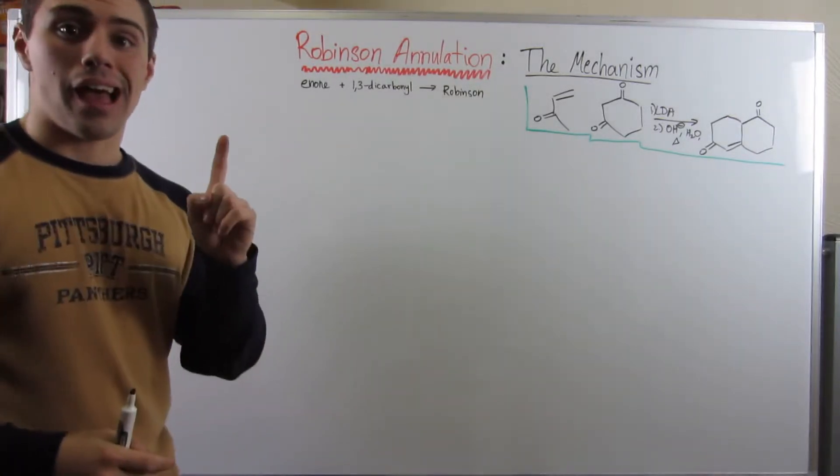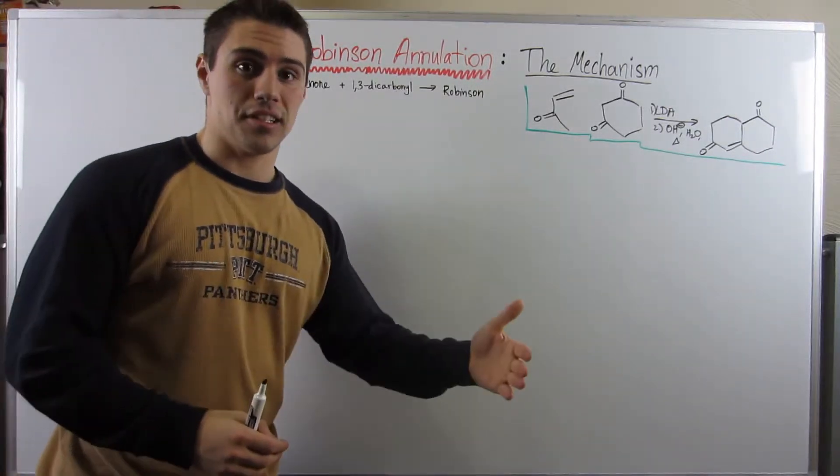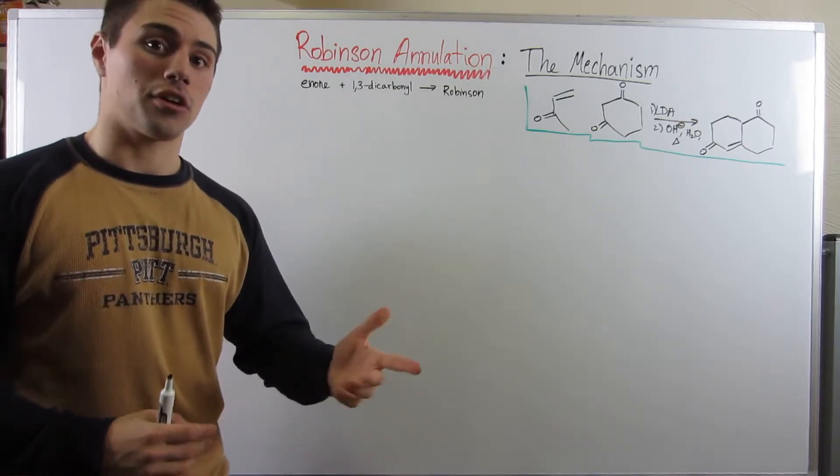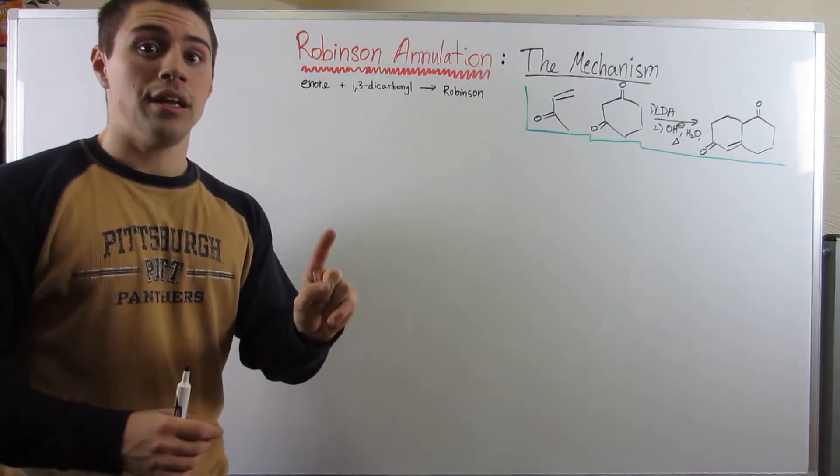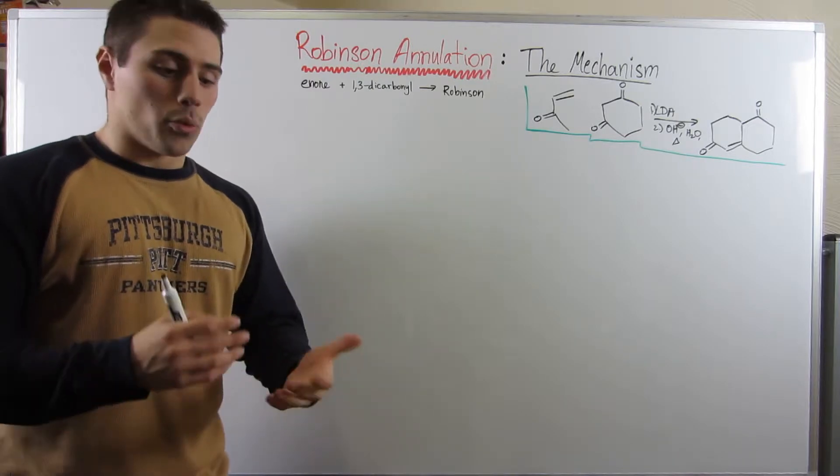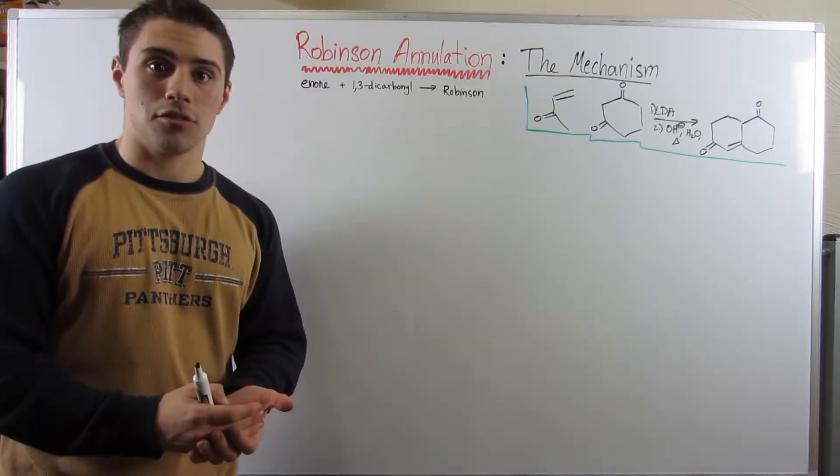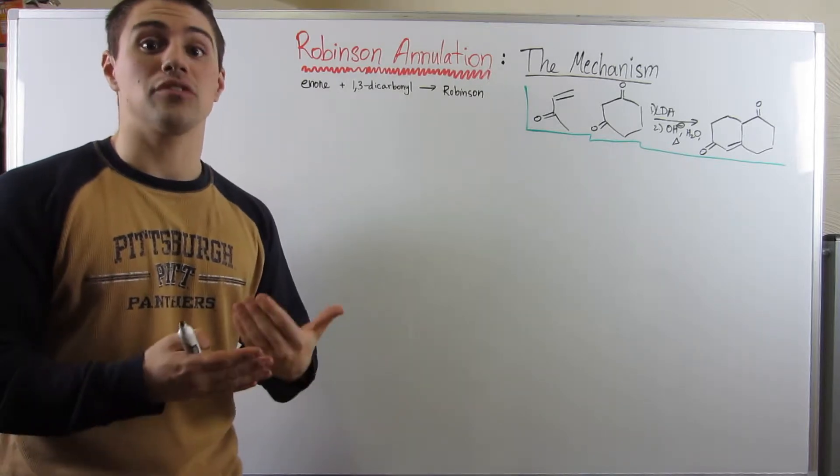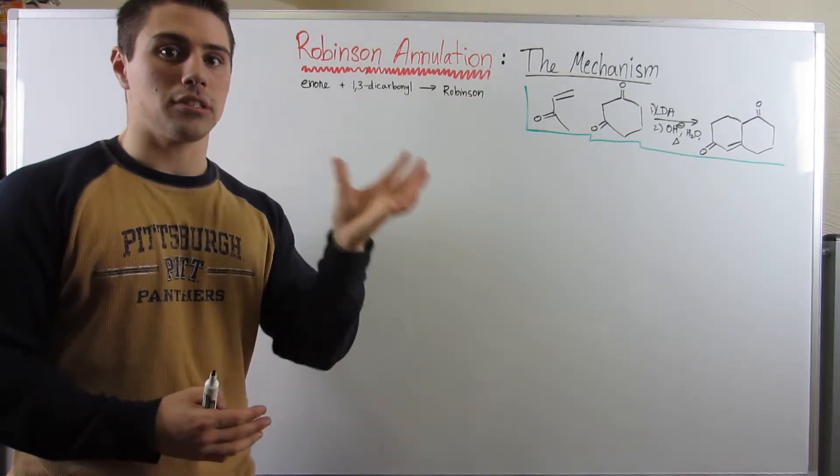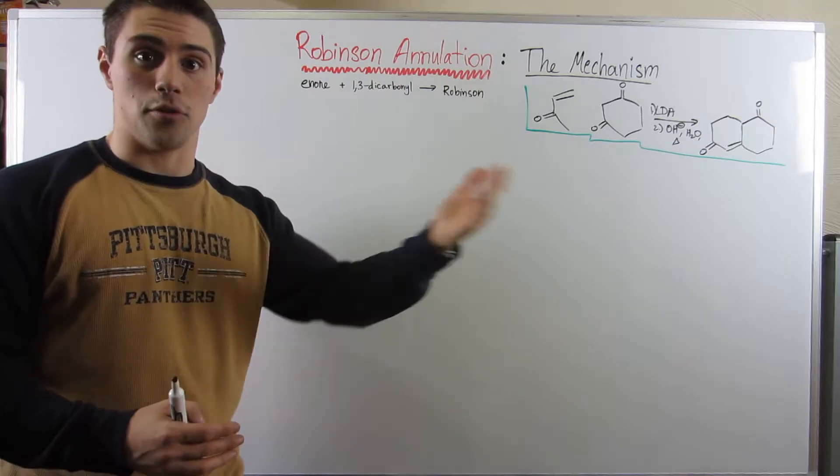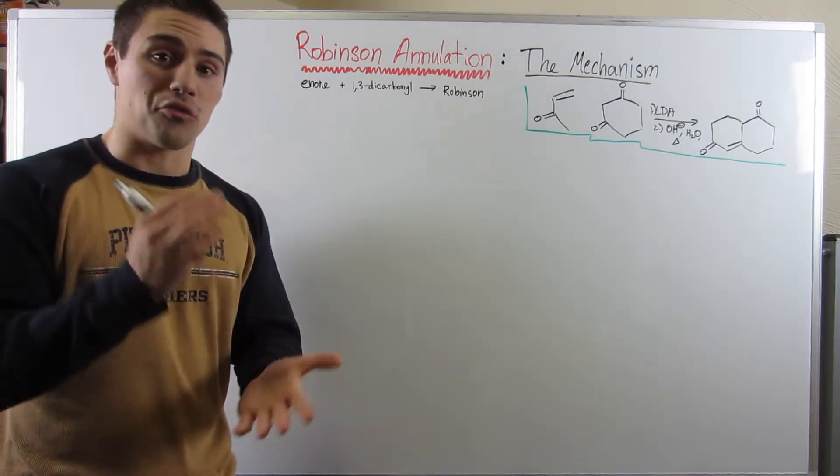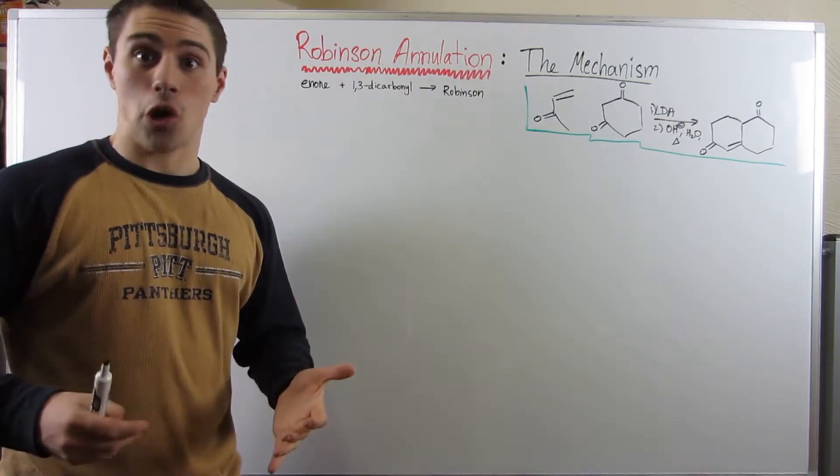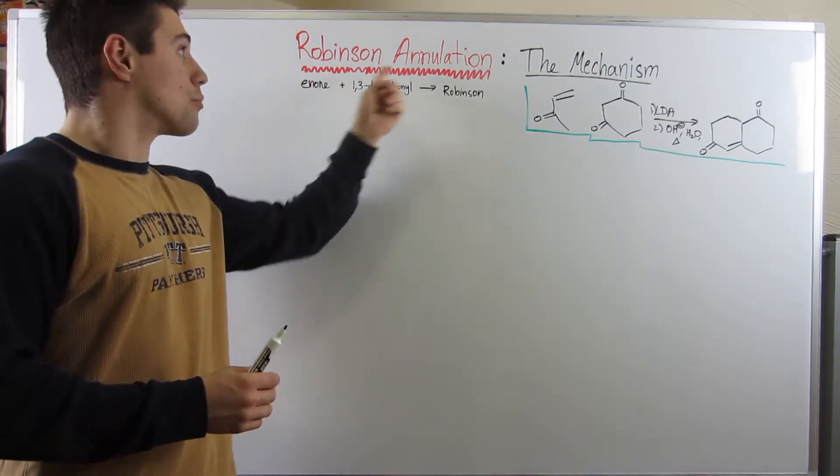Now that we've tackled aldol reactions in basic and acidic conditions, seen when it's appropriate for a condensation to occur, and covered Michael additions, we move to our final reaction. This is the last thing we're going to do with alpha carbon chemistry, and it's called the Robinson annulation.